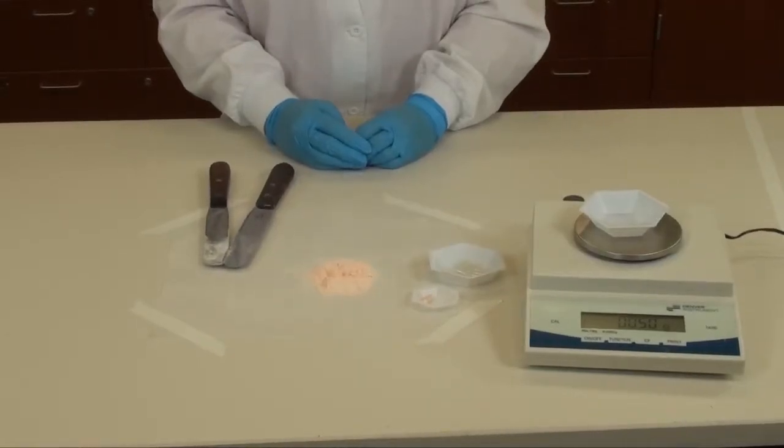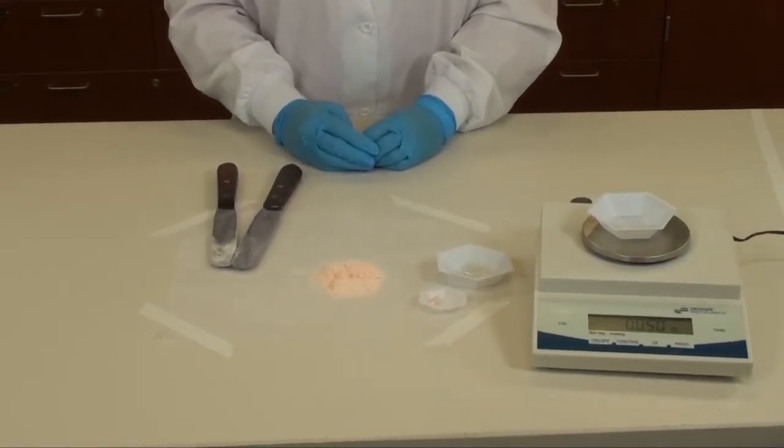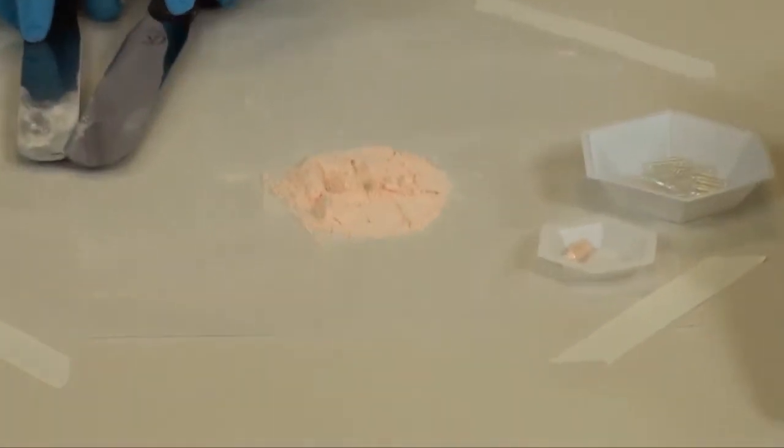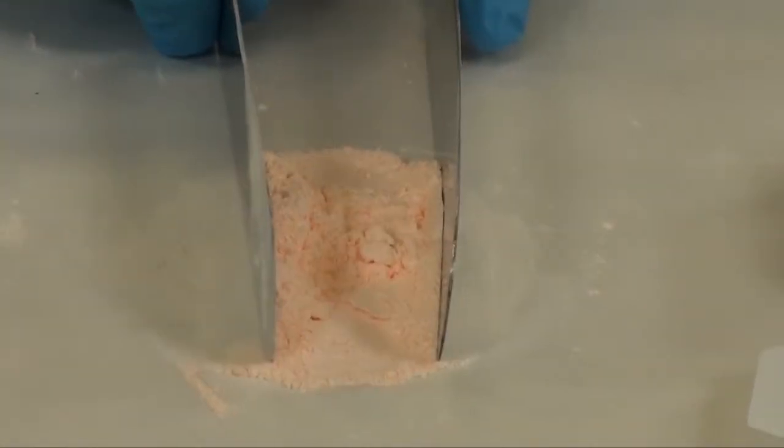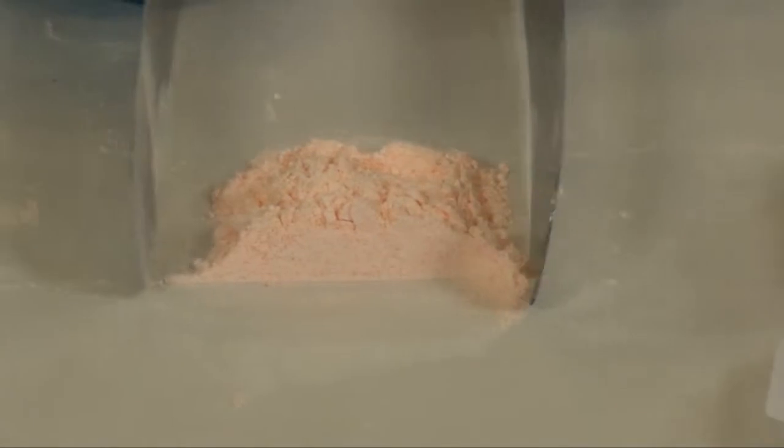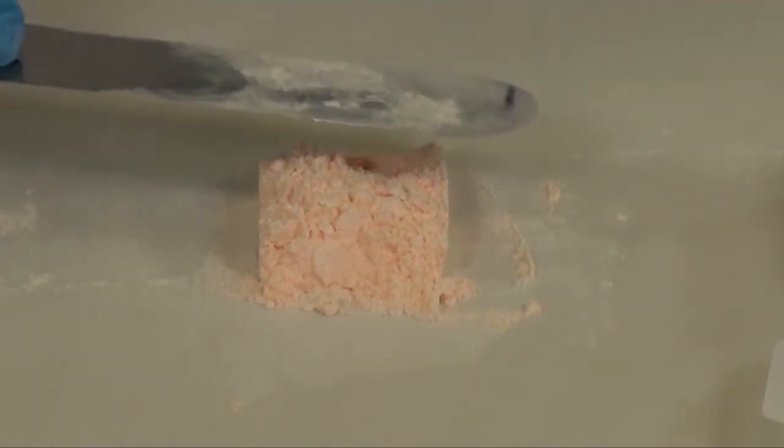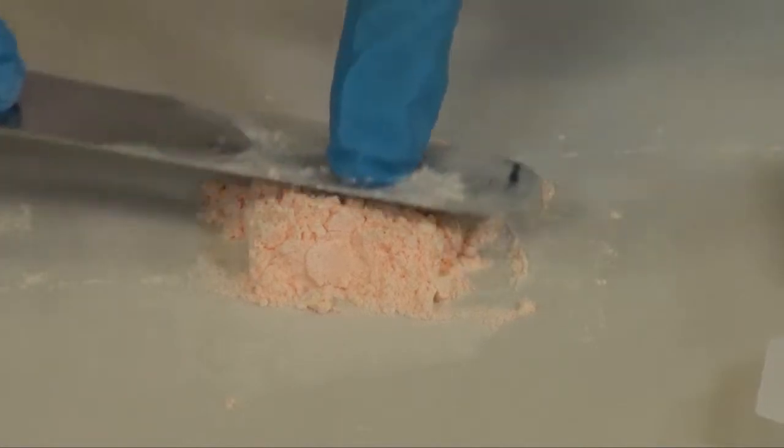Before we can punch our second capsule, we need to re-block our powder bed into a firm, compact bed. So using the two large spatulas again, re-block the powder into a square or rectangle, and then using one spatula, press it firmly down again.